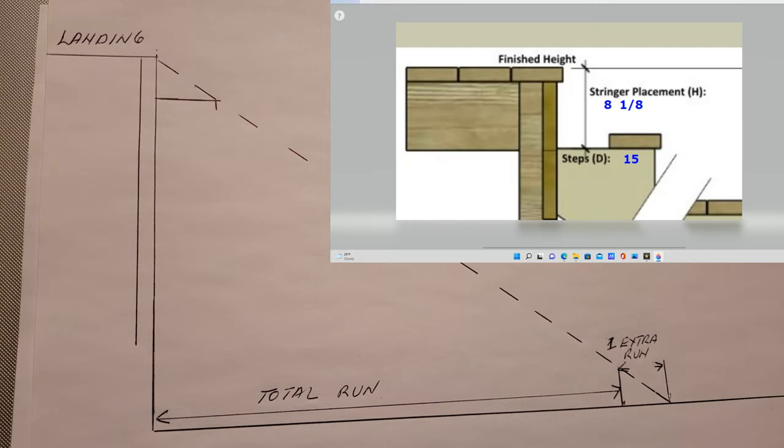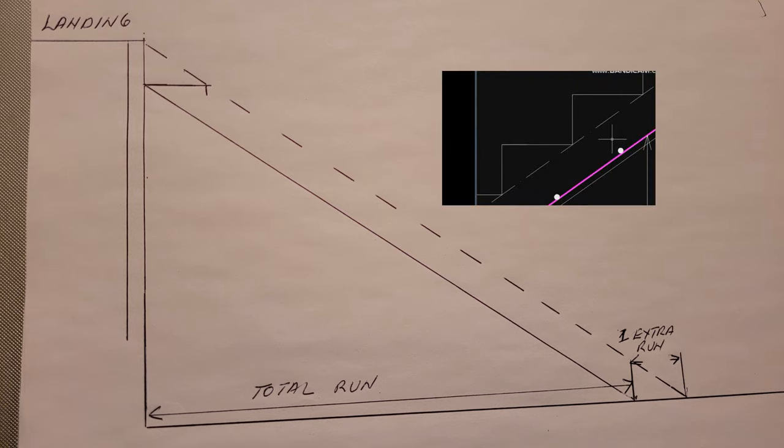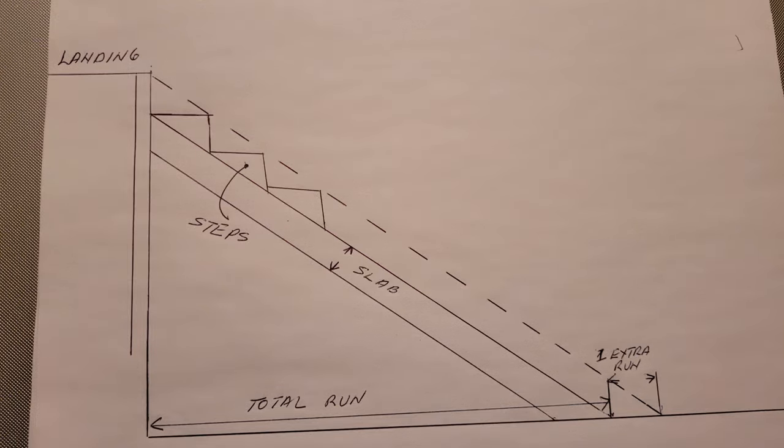Now measure one riser height from the top of your landing downwards. Draw a parallel line along the original line that goes from your landing to the floor and that will be the thickness of your steps. So now you have what your steps are going to look like and where on the floor your steps are going to start.